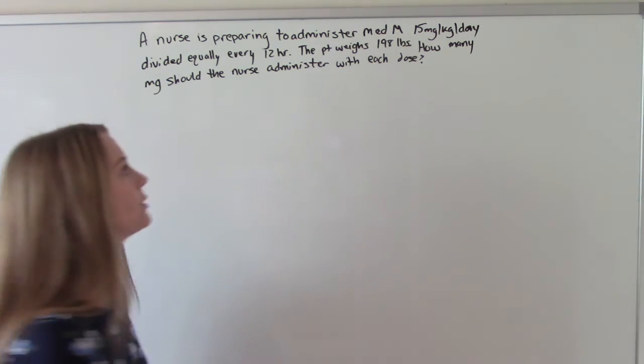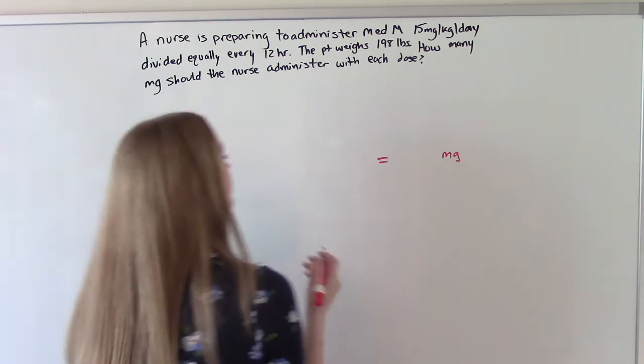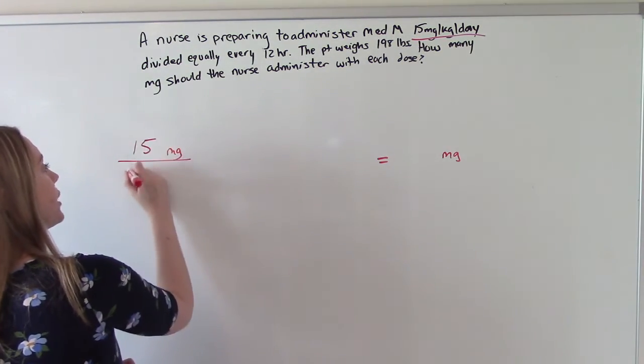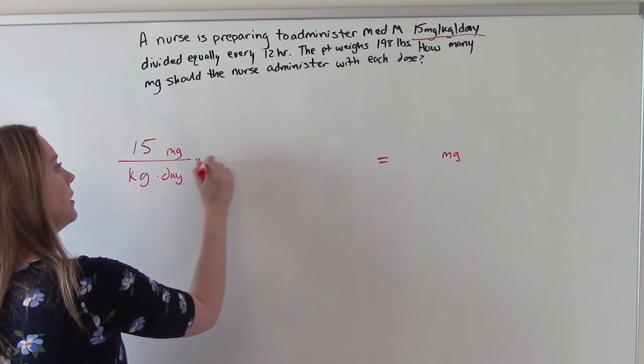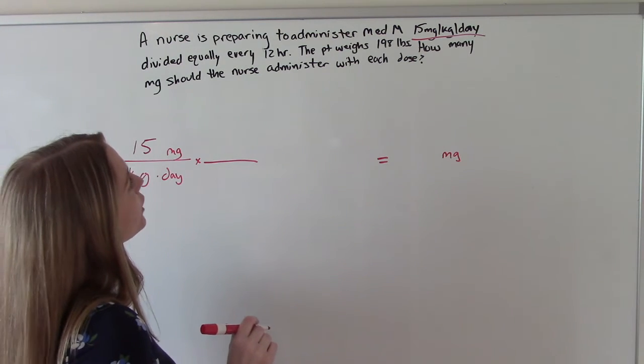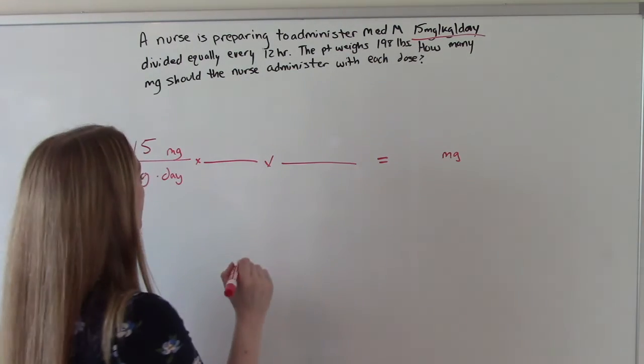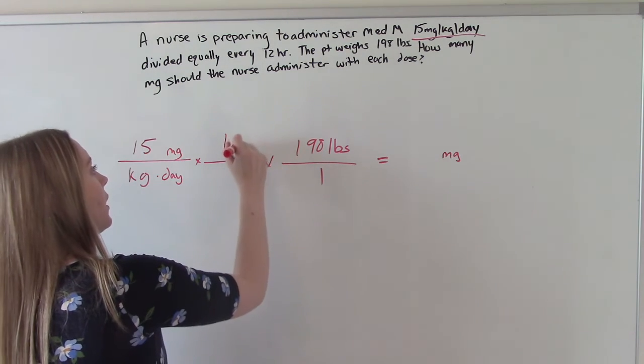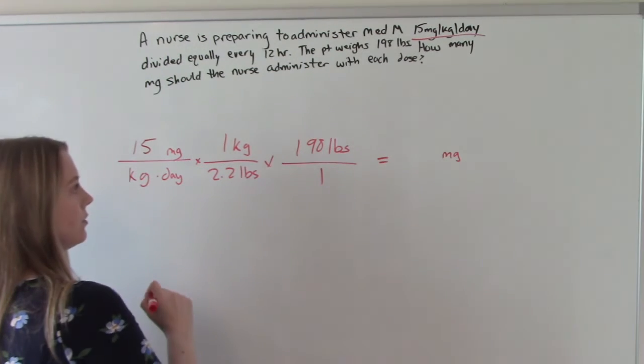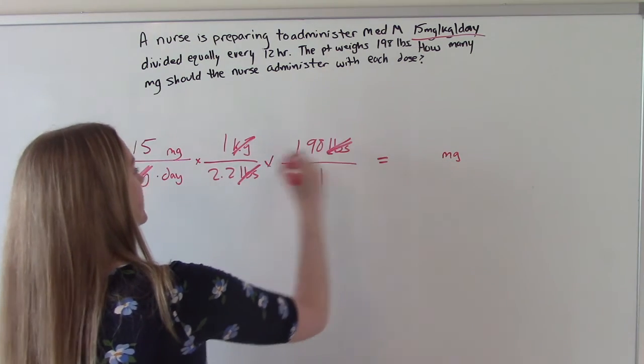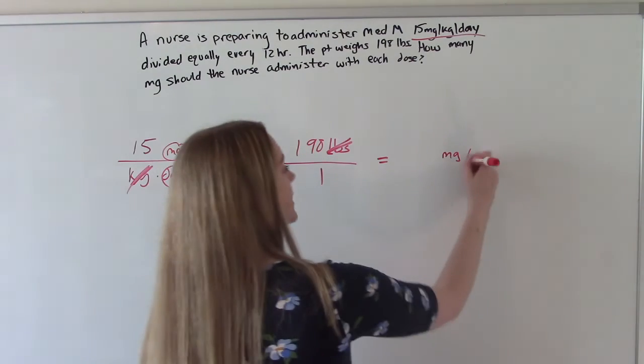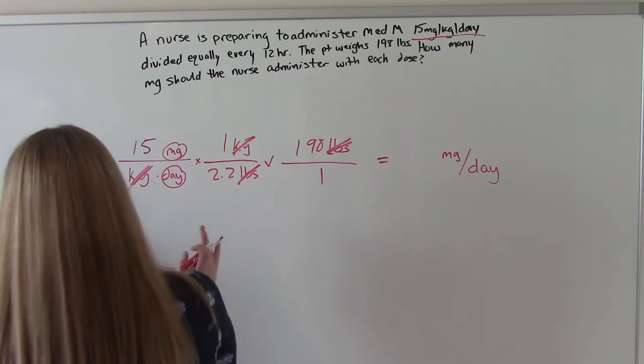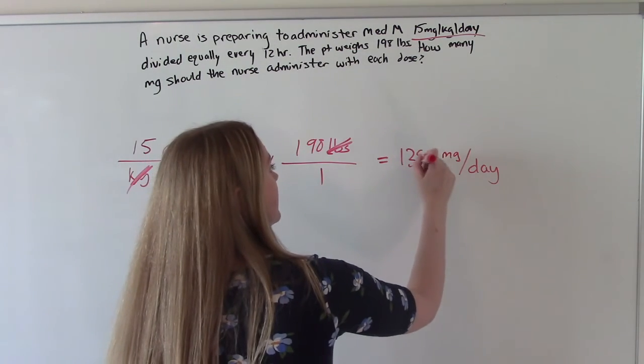So we want to know milligrams. So we'll put milligrams here in our answer. And where do we see it here in the problem to put it up here? Right there. So 15 milligrams per kilogram per day. What else do we know? We know the patient weighs 198 pounds and we need to convert pounds to kilograms. So 198 pounds over 1, and then 1 kilogram is 2.2 pounds. So the kilograms will cancel, the pounds will cancel. But this leaves us with milligrams per day, and that's not what it's asking. It's asking for milligrams per dose. So when we do the math for milligrams per day, it is 1350.